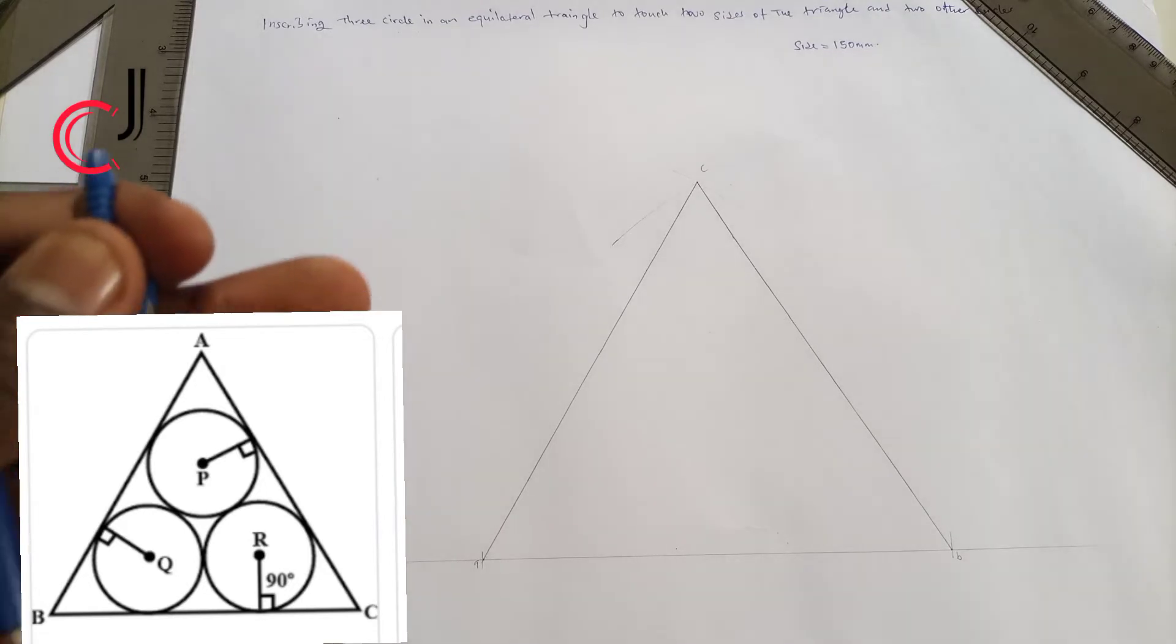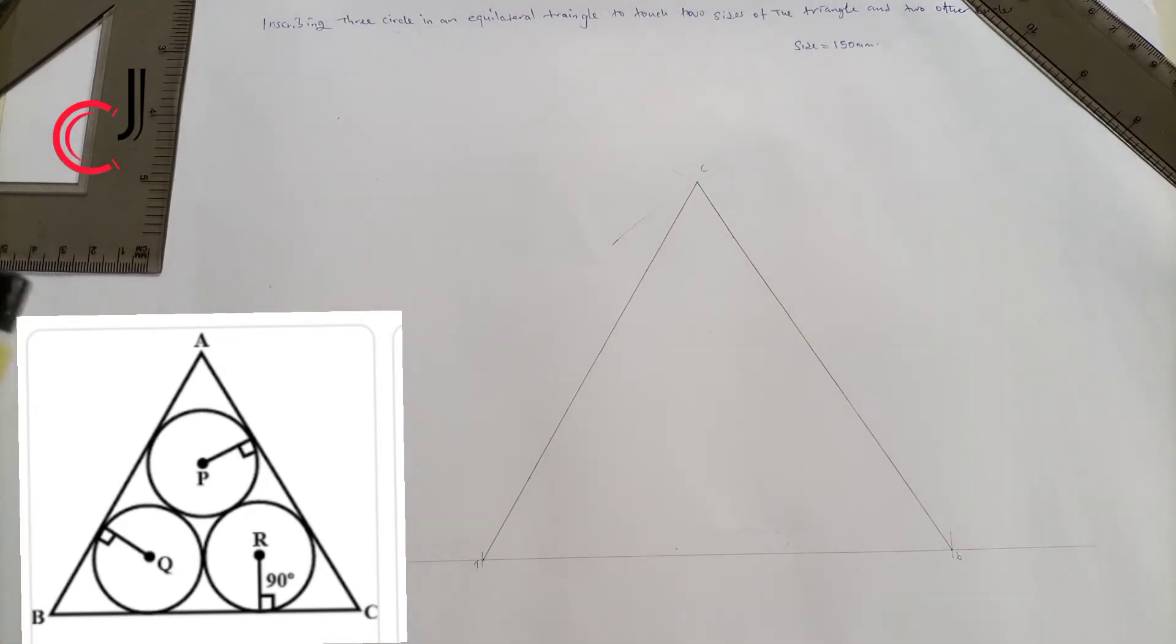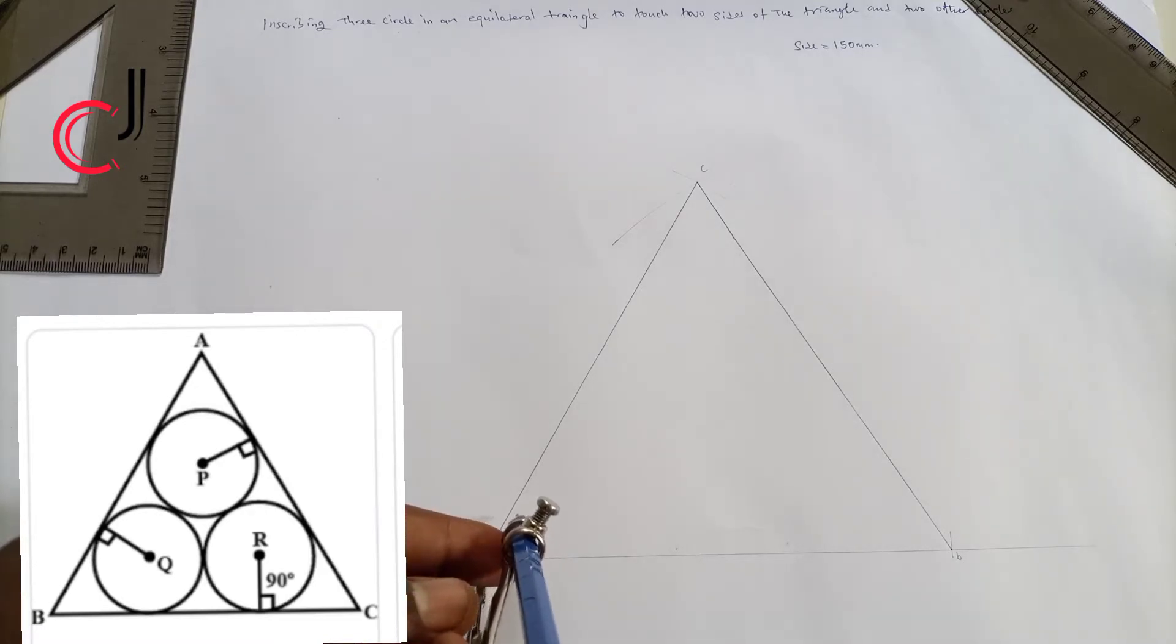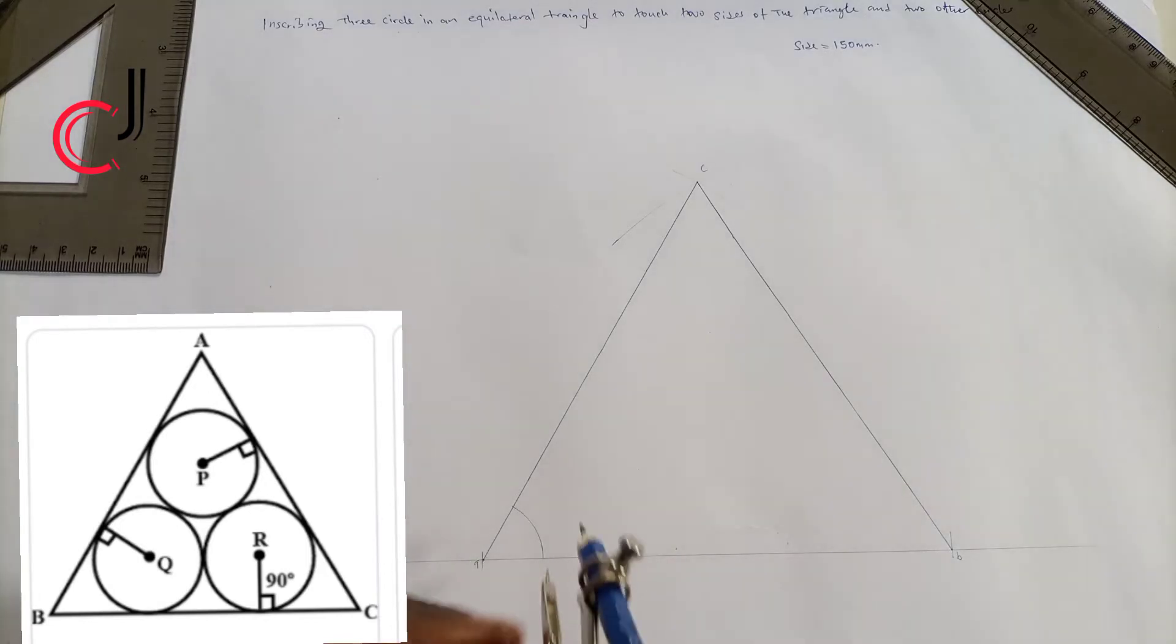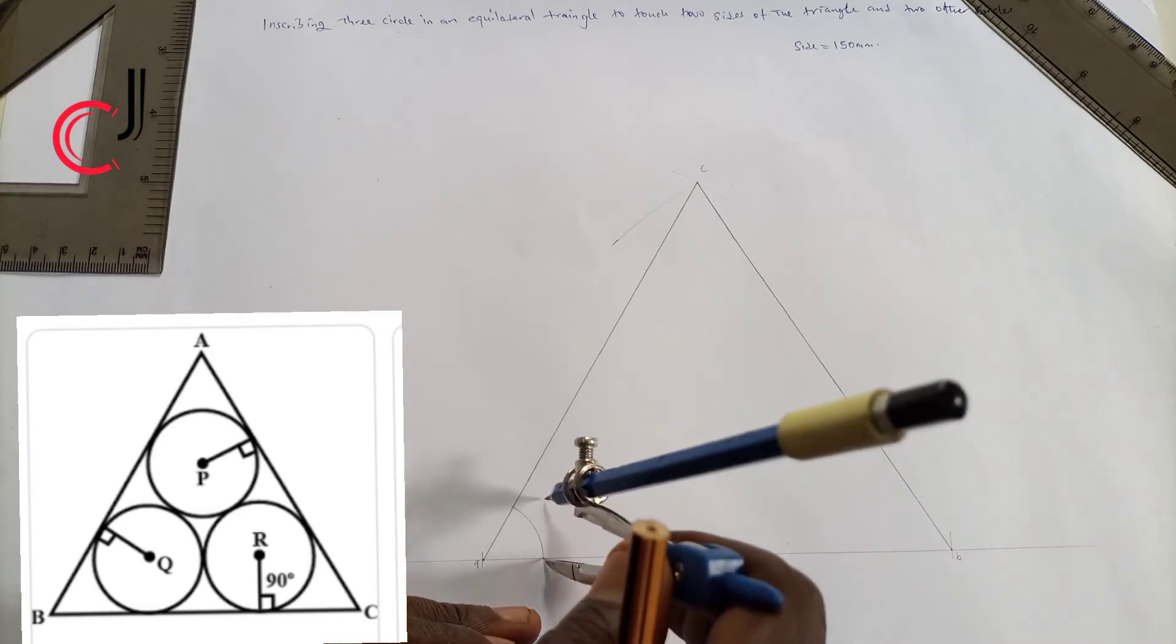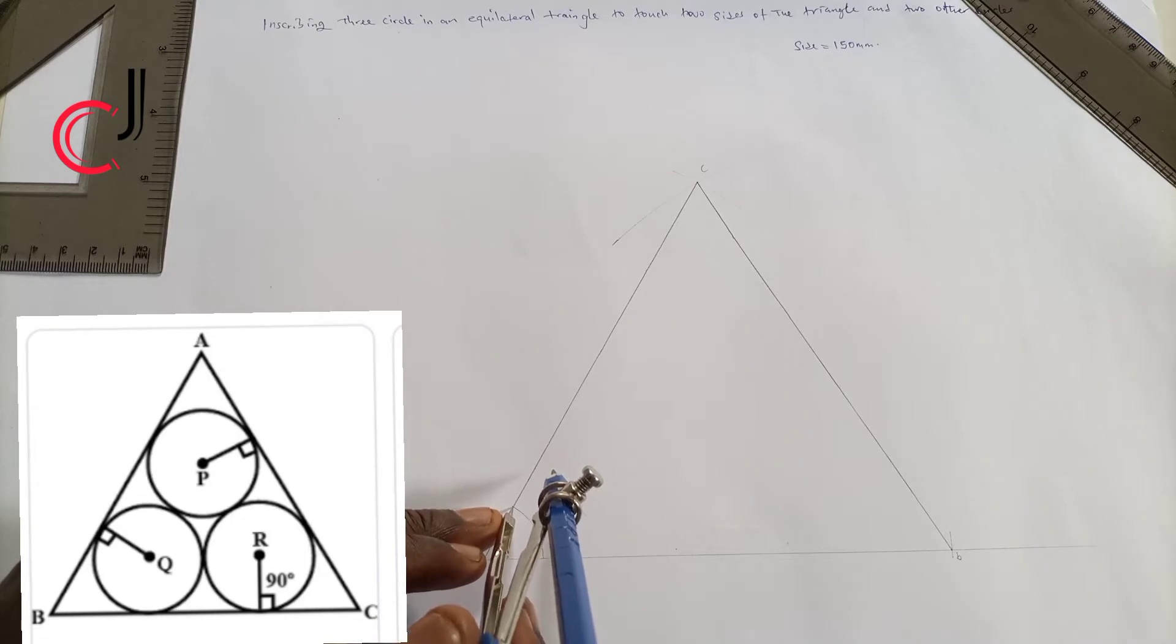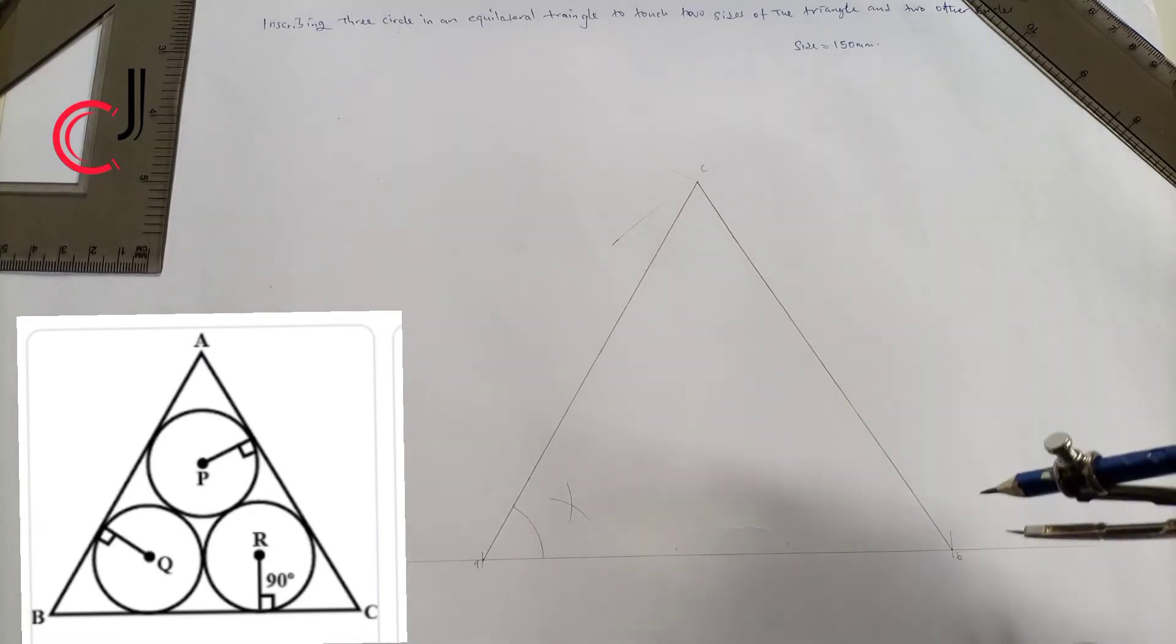Adjust our compass from point C to B. Now at point A over here, go to a convenient radius of our choice at point C. Describe an arc there. Describe a similar arc at point B also, then subscribe.